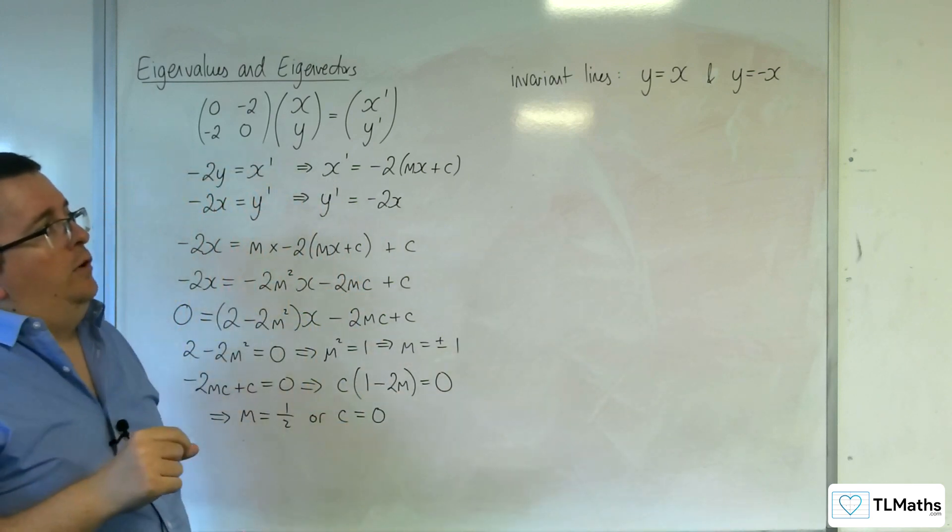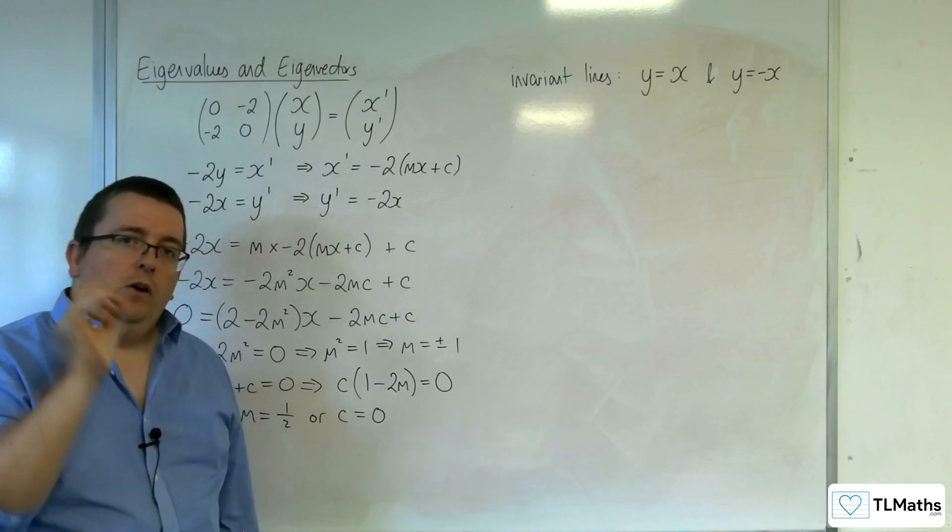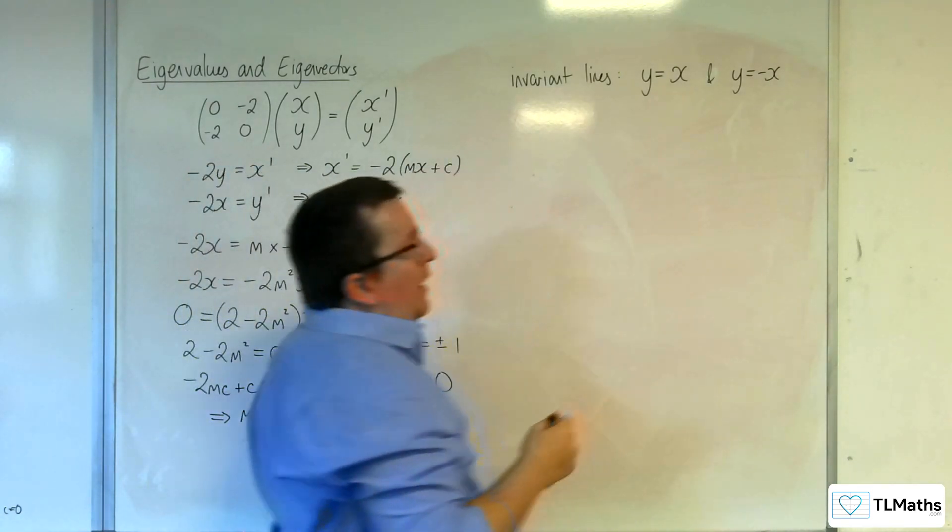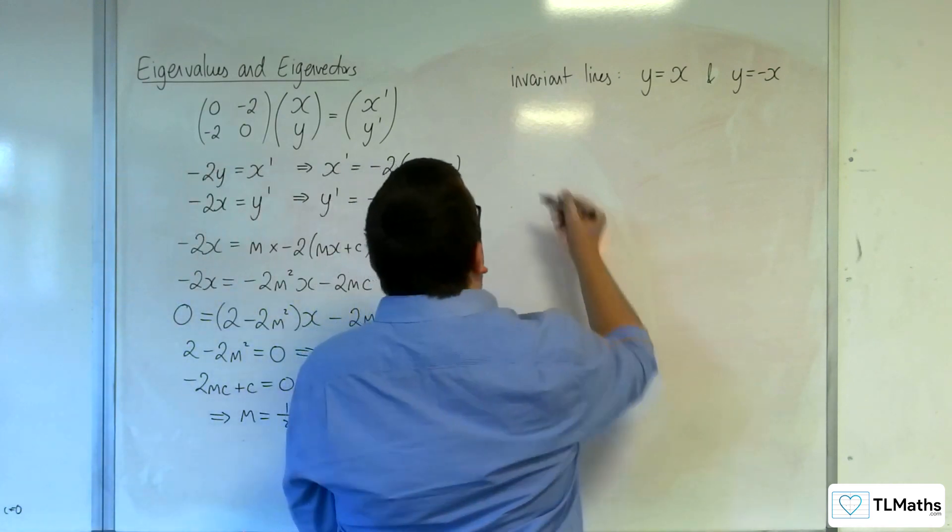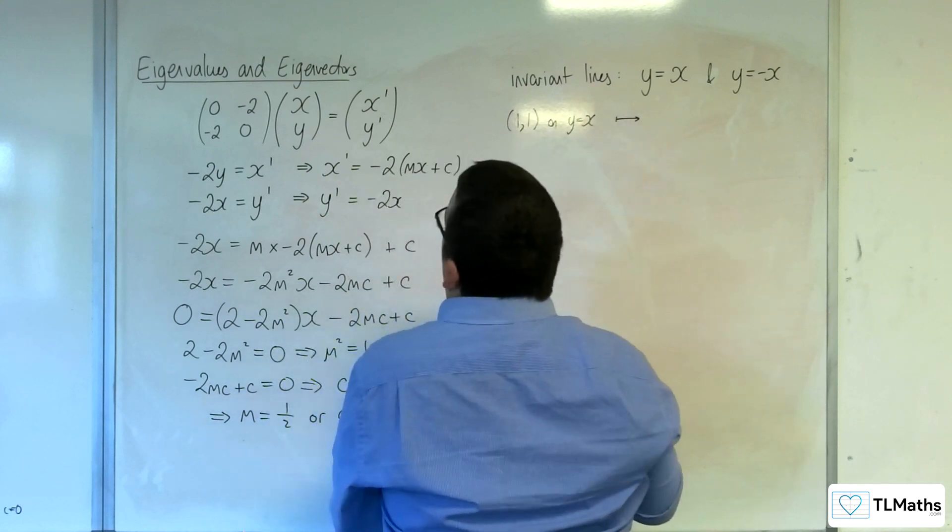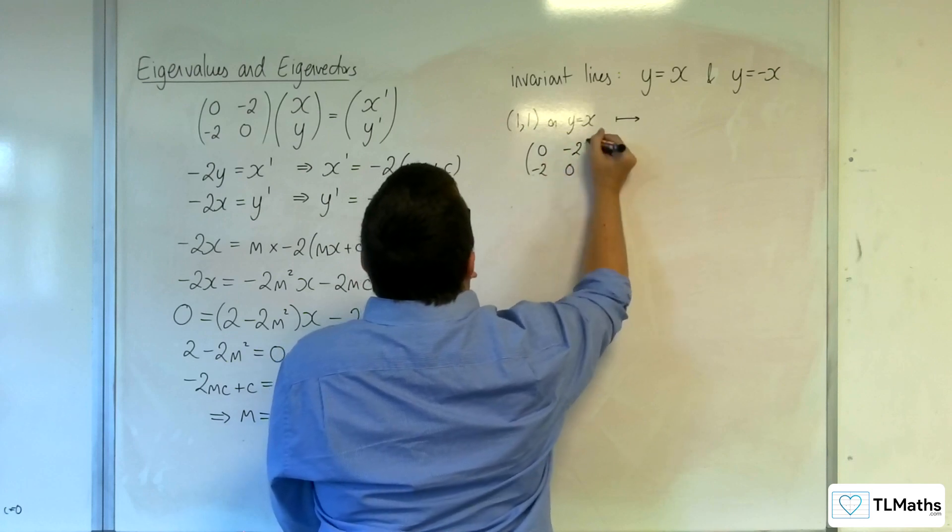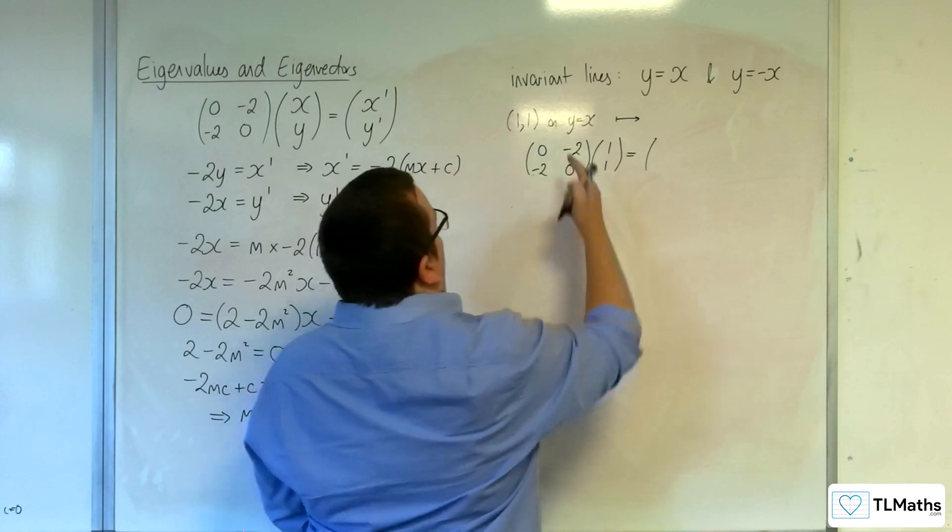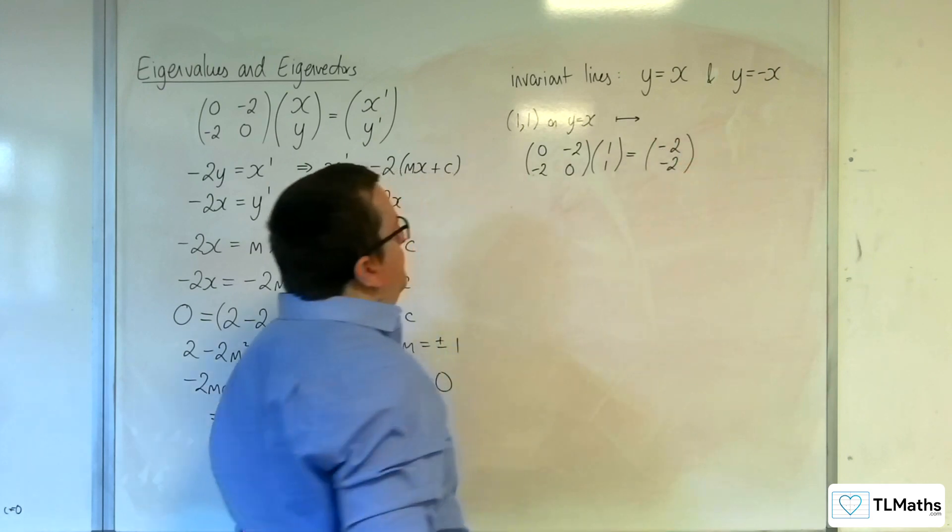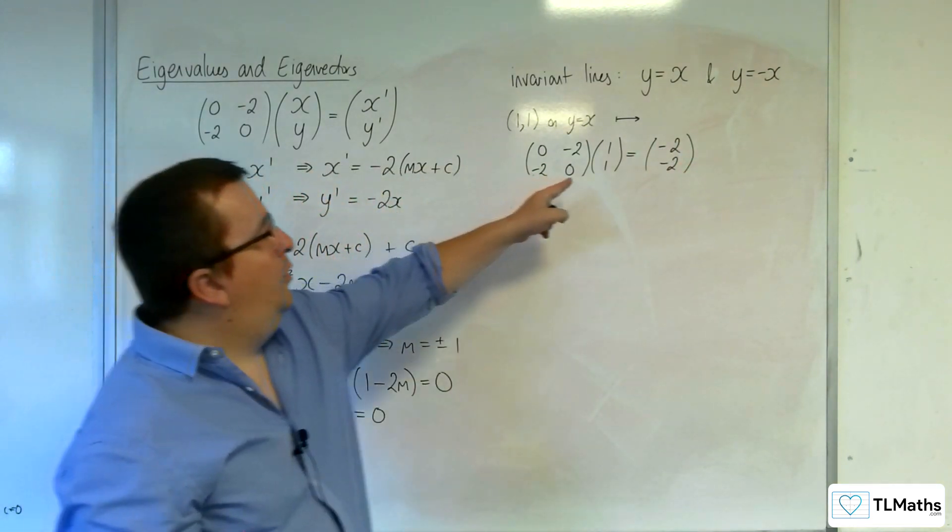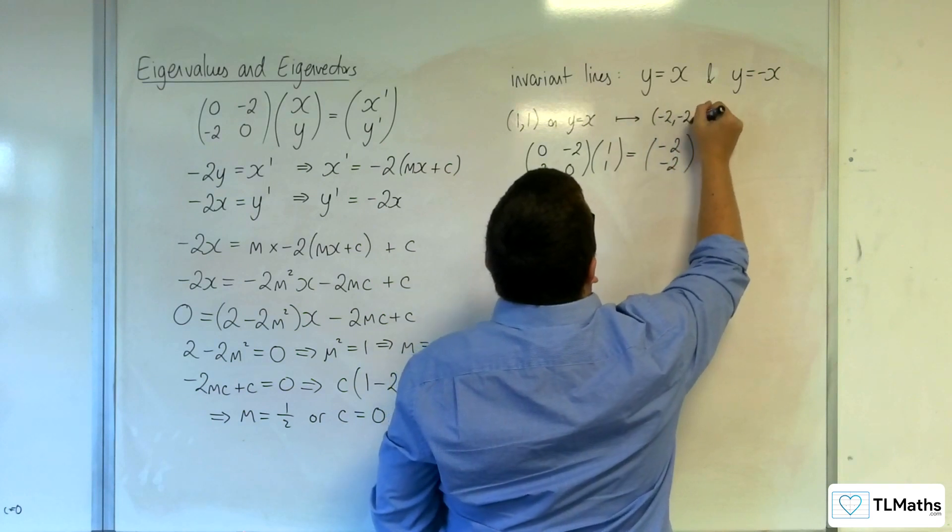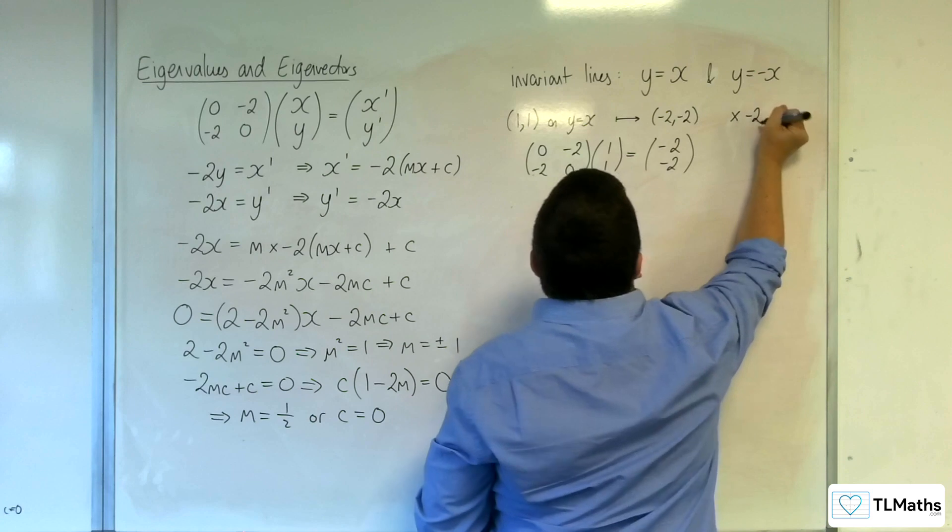Now, let's also look to see what happens to a point that begins on one of these lines. So let's choose a point. So a point on the y equals x line, 1, 1, say. Let's see what happens to it. So 0 minus 2 minus 2 is 0, and we're going to apply 1, 1. And what do we get? So we get 0 times 1, take minus 2 times 1, so minus 2. And we're going to get minus 2 as well. So what happens is that the coordinate gets multiplied by minus 2. So 1, 1 will go to minus 2, minus 2. So we're multiplying by minus 2.